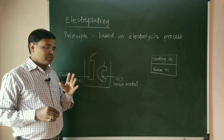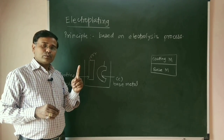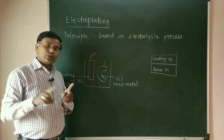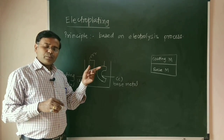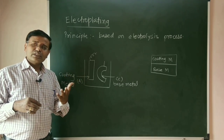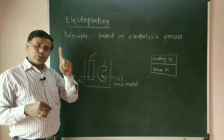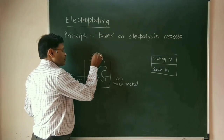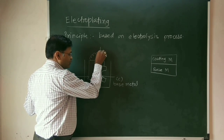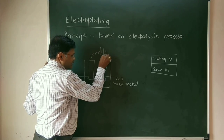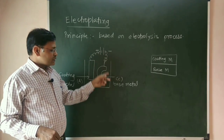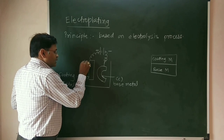I always suggest my students to remember only one thing: the positive terminal of the battery is connected to the coating metal, which is the anode, and the negative terminal of the battery is connected to the base metal. So coating metal is connected to the positive terminal and base metal to the negative terminal.